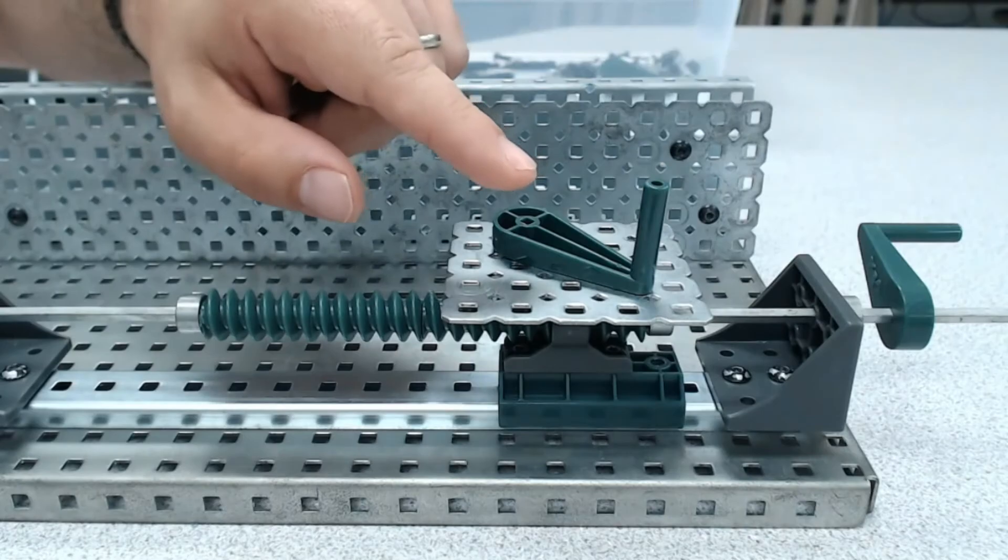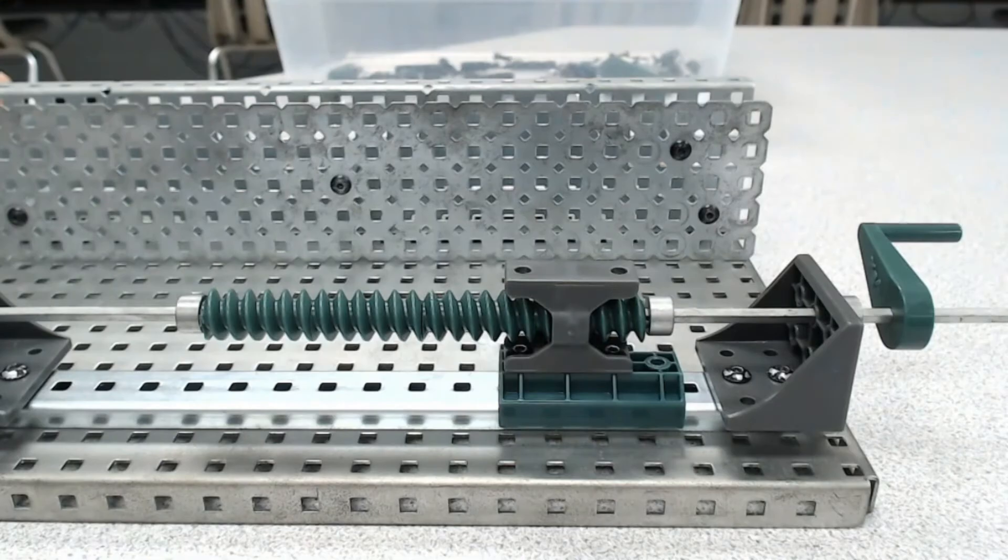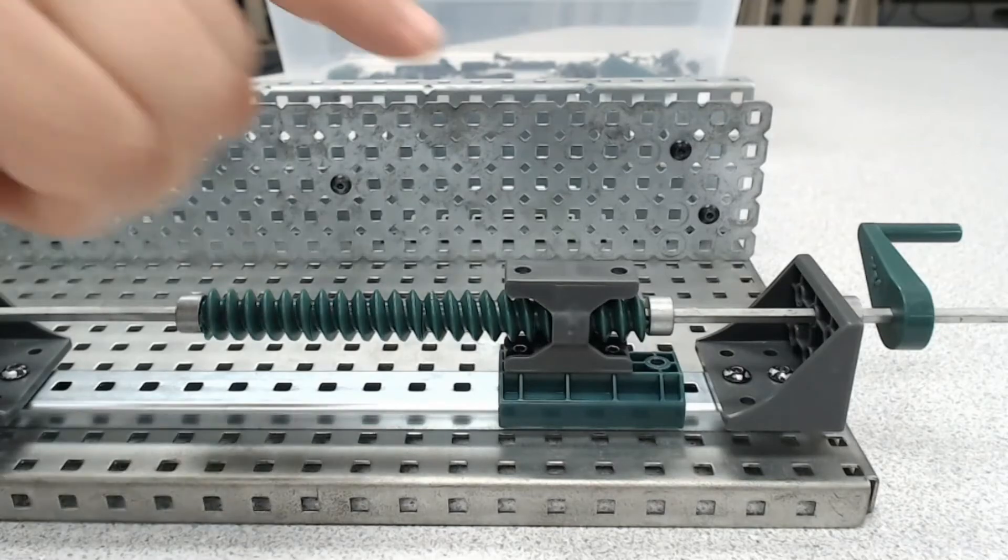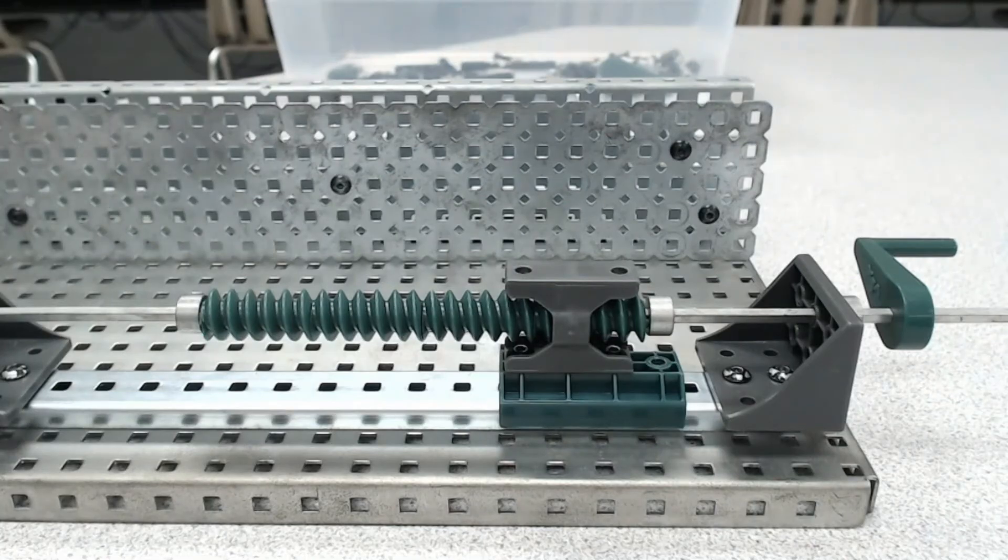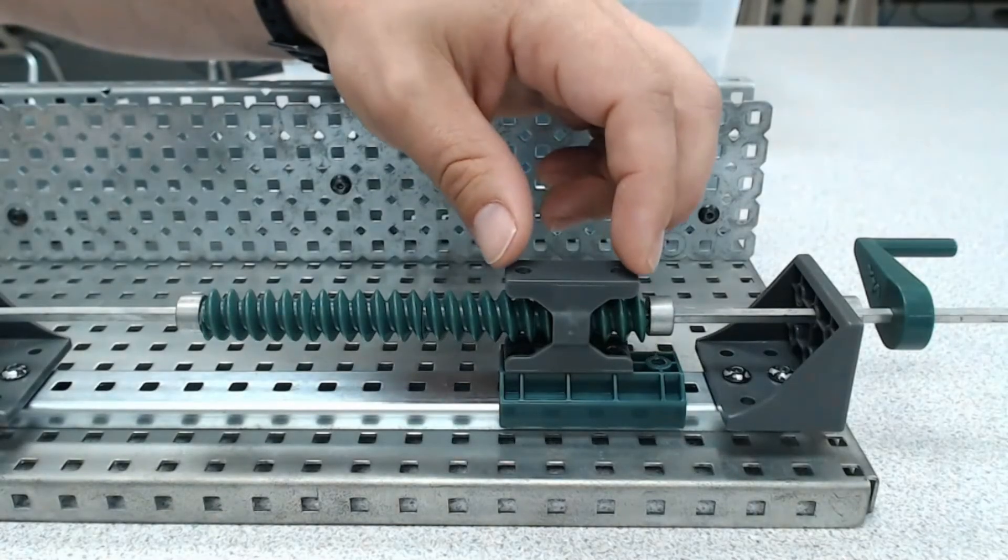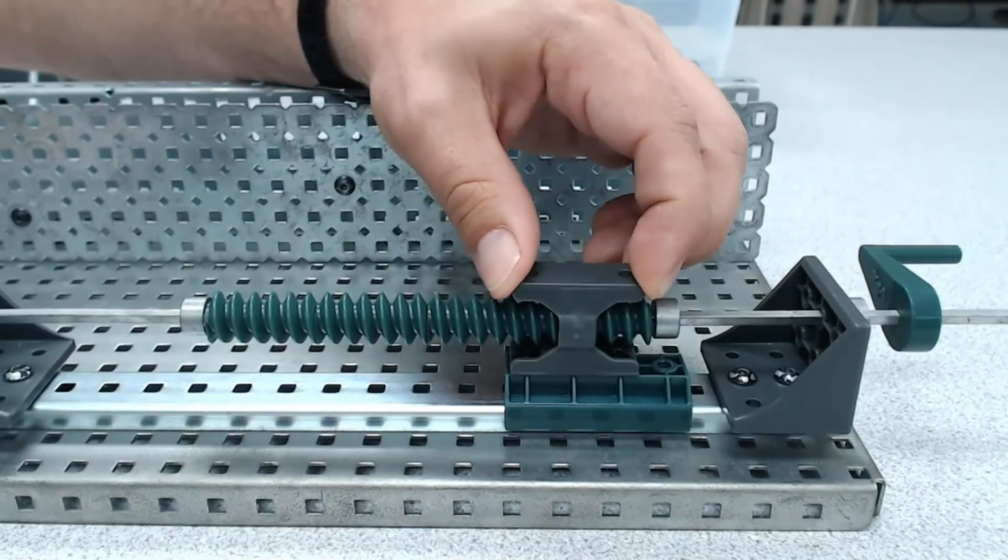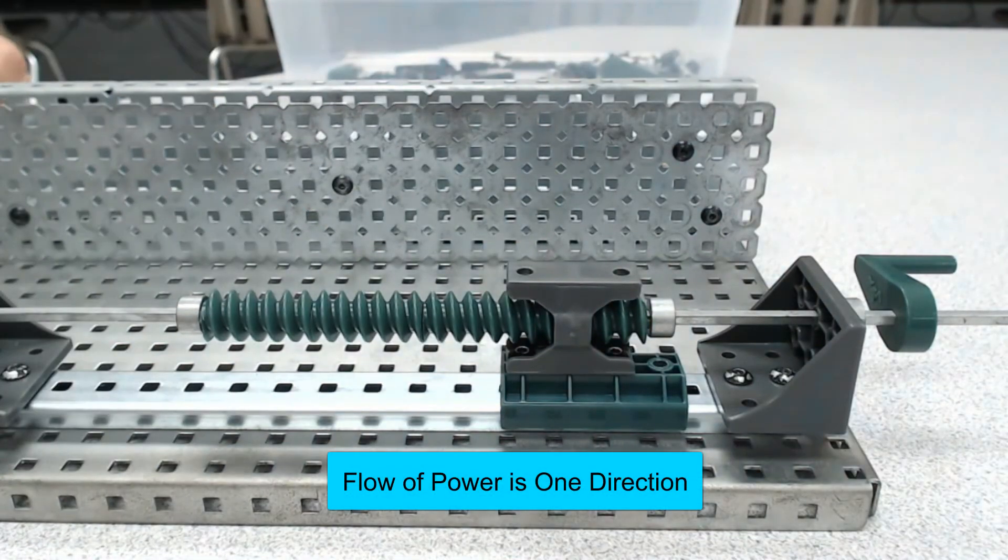So now let's talk about flow of power. Since we're talking about moving something heavy by using the power of the system, is the flow of power of this reversible? Now reminder, the flow of power being reversible means that if I were to push on this, I can make the input rotate. So what do you think is going to happen? Let's give it a shot. You'll notice that it's not moving at all, which means that for this system the flow of power is not reversible.